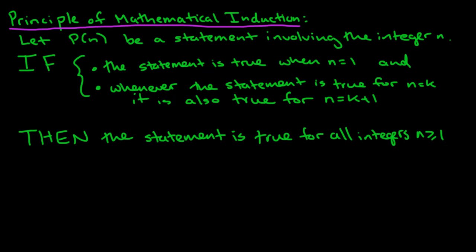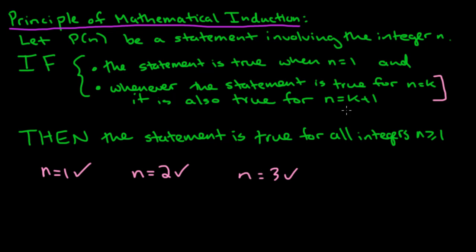Just in case you haven't seen this before, let's think about why this works. If you know the statement works for n equals 1 — that's because of the first part. And since whenever it's true for n equals k it's true for n equals k plus 1, because it's true for n equals 1, it's true for n equals 2; then for n equals 2, it's true for n equals 3; using k equals 3, it's true for n equals 4. You can repeat this argument as much as you like, so it's always true for n bigger than or equal to 1.